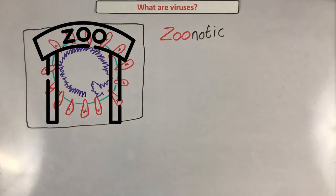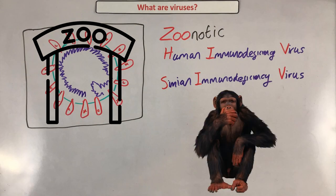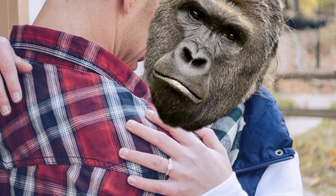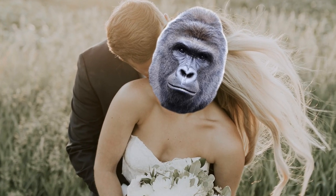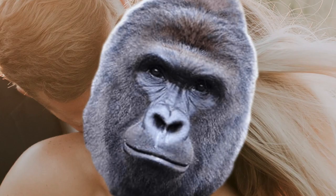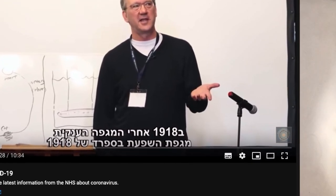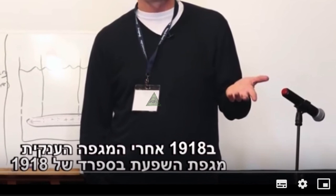COVID-19 originated from animals and crossed over to humans — it is zoonotic — just like HIV, which is a mutant form of SIV that infects other apes. It is very unlikely that HIV started because someone had sexual contact with a monkey — it more likely came from eating bush meat or a scratch when someone was trying to catch one. In the next video, I'm going to take apart the circulating video on the 5G conspiracy and coronavirus, so stay tuned for that one.